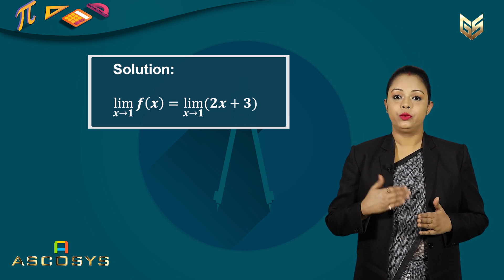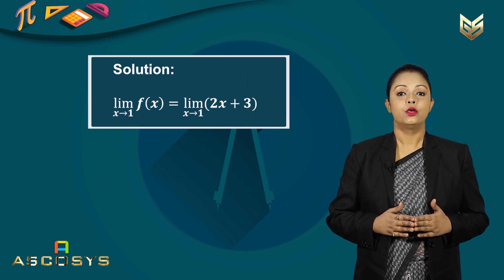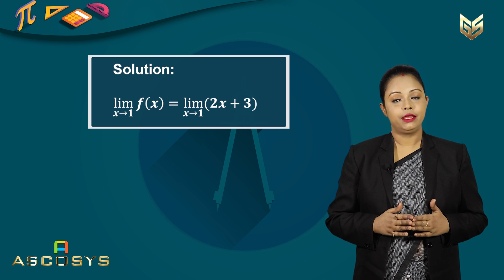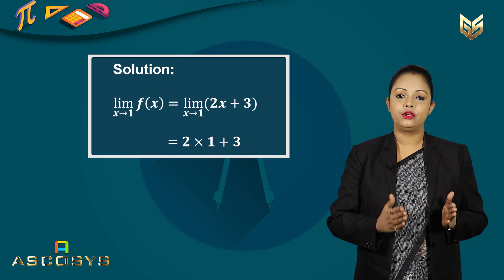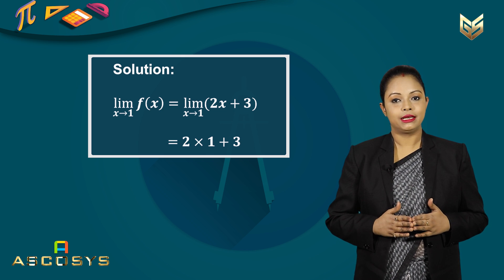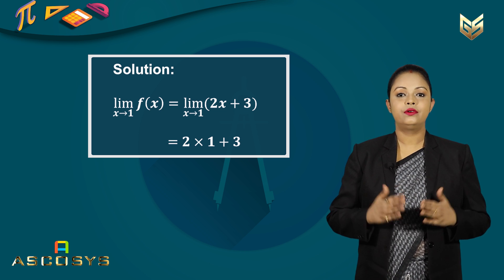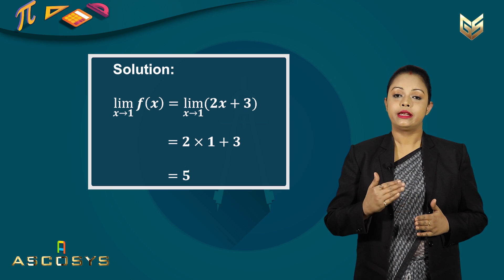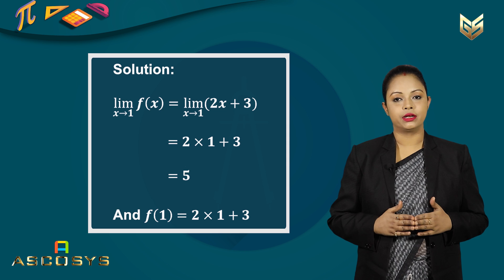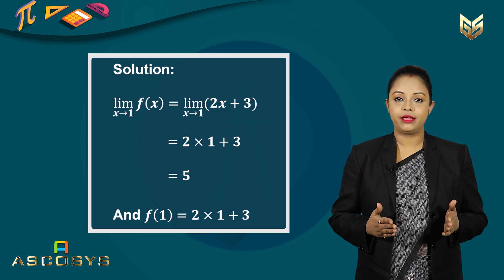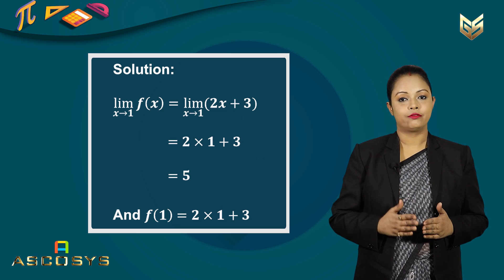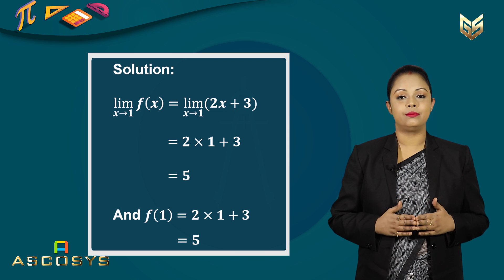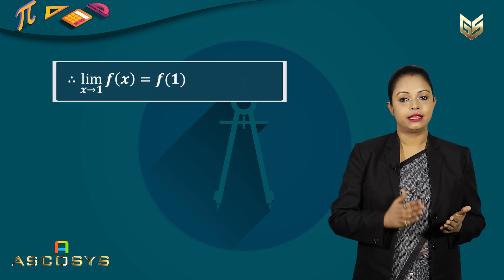Now we are going to apply our knowledge of limits — we have to see whether our function is defined once we put the limiting value. If we put x equal to 1, we can see that 2 into 1 plus 3 is defined. So after applying limits, our answer is 2 into 1 plus 3, which equals 5. Now we have to find the value of the function at x equal to 1, that means f(1). Since f(x) is 2x plus 3, f(1) equals 2 into 1 plus 3, which is also 5. The limit value and the value of the function are the same. Therefore, f(x) is continuous at x equal to 1.